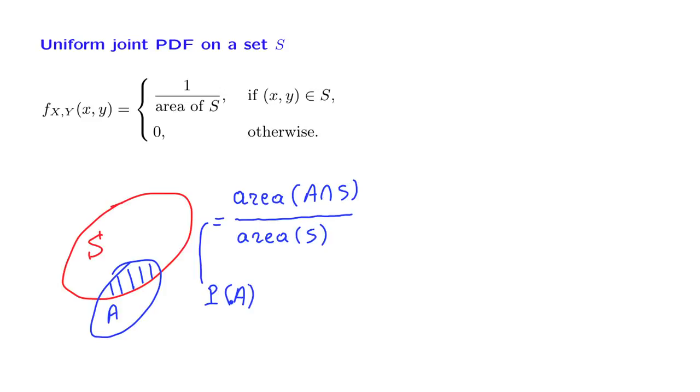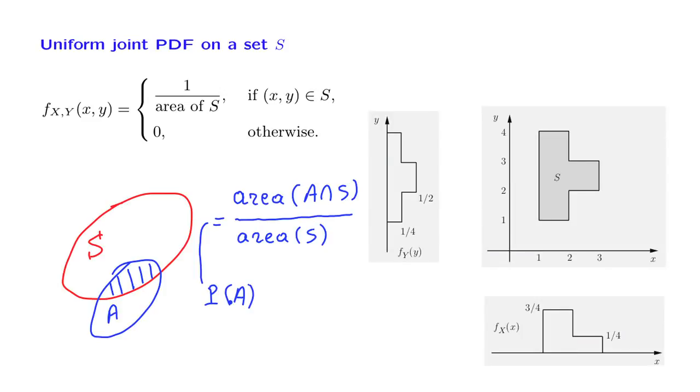Let us now look at a specific example. Suppose that we have a uniform PDF over this particular set S. This set has an area that is equal to 4. It consists of 4 unit rectangles arranged next to each other. So the height of the joint PDF in this example is going to be 1 fourth. It is 1 fourth on that set, but of course it's going to be 0 outside that set.